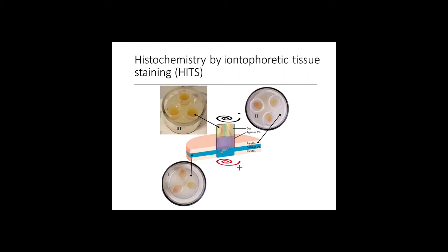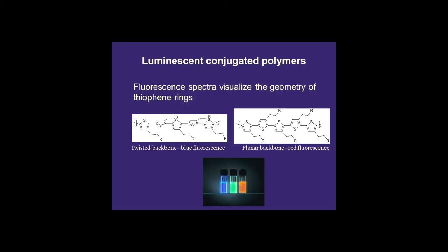And actually what we have found is that the best dyes, I'm interested in amyloids, in protein aggregates. And there are some wonderful dyes, which are called luminescent conjugated polymers or polythiophenes.